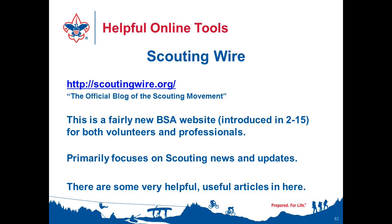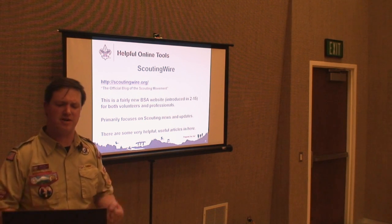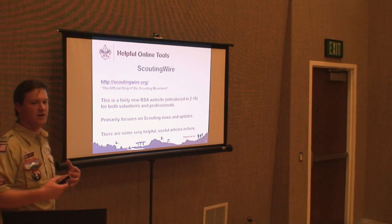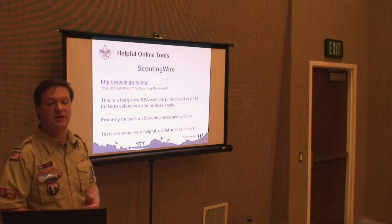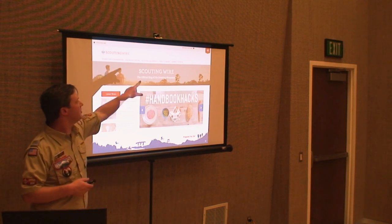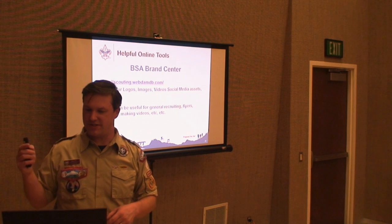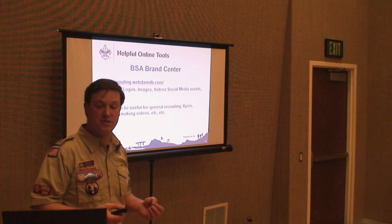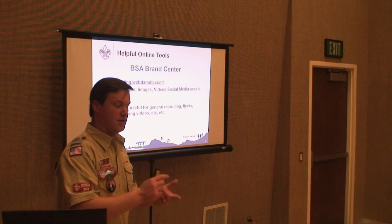Scouting Wire is supposedly the official blog of the scouting movement, introduced last year. It primarily focuses on what's coming up, what's new, changes to expect — probably a lot right now about new Boy Scout requirements. Some helpful articles. The BSA Brand Center is great if you're a membership and recruitment person — logos, images, videos for websites, flyers, banners. If you need a Florida de Lis or cub scout symbol in high quality, that's the place to go.